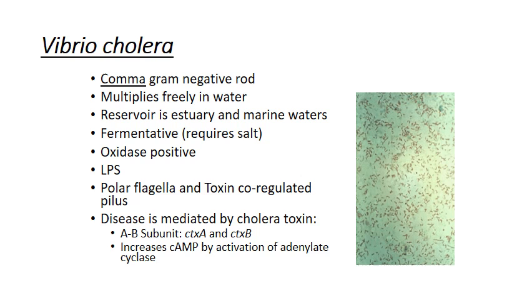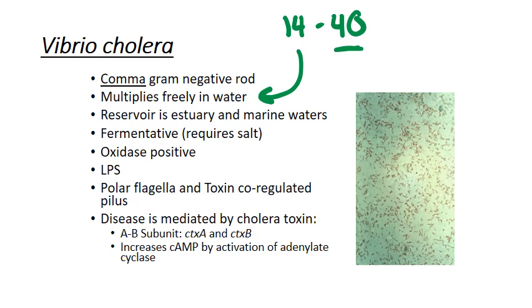Vibrio cholerae grows well on a variety of simple media and is a hardy organism. It can grow at a wide range of temperatures, from 14 to 40 degrees Celsius. This is important because it multiplies well in free water, and this wide temperature range is not a problem.